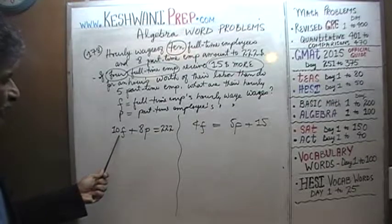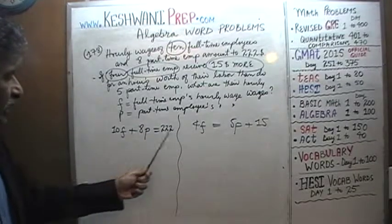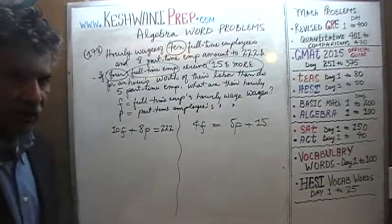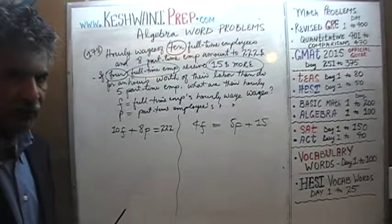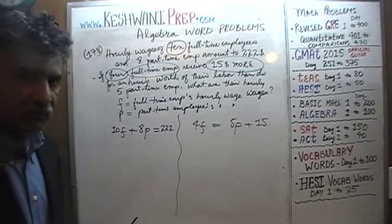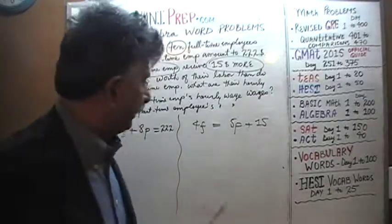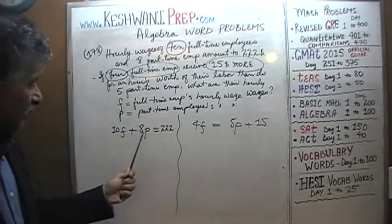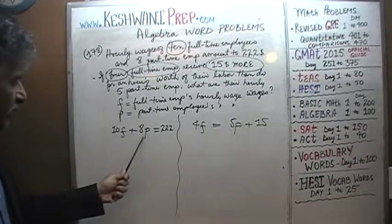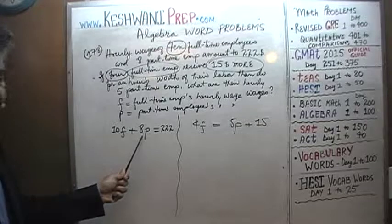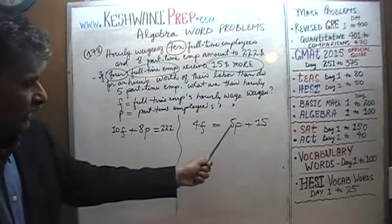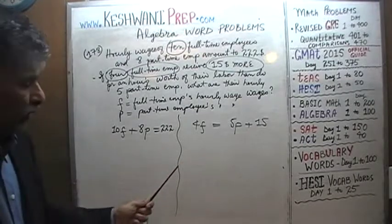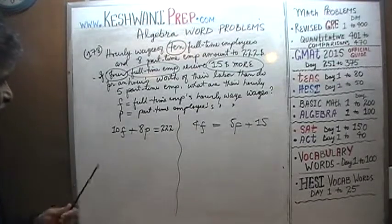As you can see, we have different coefficients here. F has a coefficient of 10 in the first equation and 4 in the second; P has 8 and 5. It will be difficult to add and subtract the two equations directly. We need to make the coefficient of one variable the same. We can make the coefficient of P the same by multiplying: 5 times 8 is 40, and 8 times 5 is 40. Or we can make the coefficient of F the same.